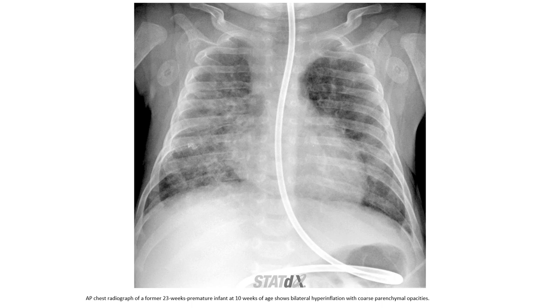Let's see the first case. This is a chest X-ray of a former 23-week premature infant at 10 weeks of age, showing bilateral hyperinflation with coarse parenchymal opacity.